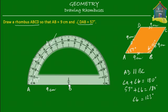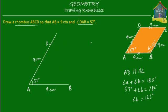Place the center of the protractor at B and read the degrees. We have to mark 123 degrees: 10, 20, 30, 40, 50, 60, 70, 80, 90, 100, 110, 120, and 123 is here. So I make a point, remove the protractor, and join that point with B. Here I have a line that's parallel to AD, starting from B.